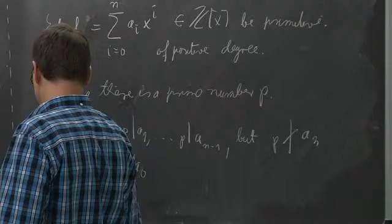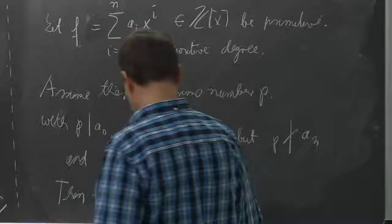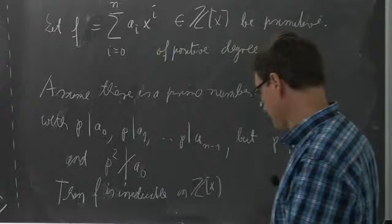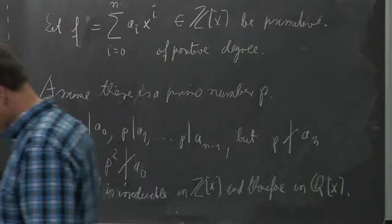Then f is irreducible in Z[x], and therefore also in Q[x]. This is the well-known criterion to check a polynomial is irreducible — it is somewhat special so one cannot apply it all that often, but sometimes one can.